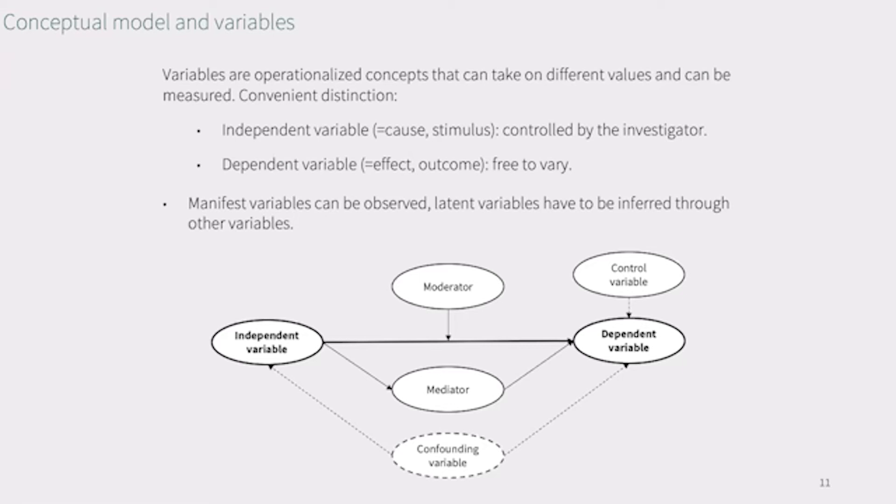The independent variable is a variable that is manipulated by the investigator. Often it is called cause or stimulus. The dependent variable is what is left free to vary and measured after having manipulated the independent variable. We can also refer to it as the effect or outcome variable. So, the basic relationship that we seek to establish in experiments is the bold one below. That between independent and dependent variable.